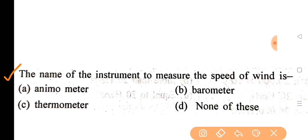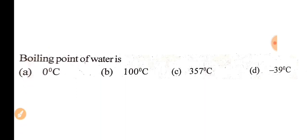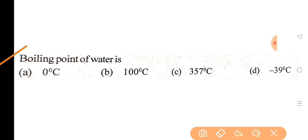Next question: the name of the instrument to measure the speed of wind is? Correct answer is option A, anemometer. Next question: boiling point of water is? Correct answer is option B, 100 degrees Celsius.